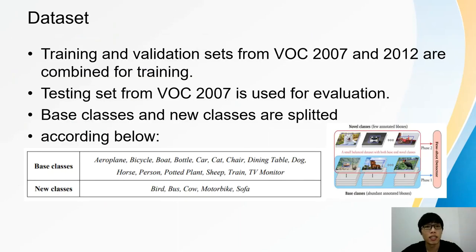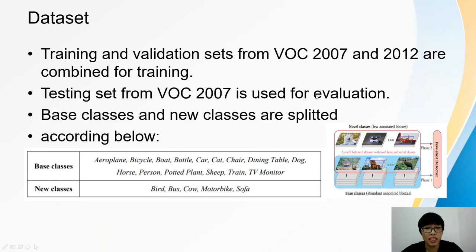Next, I will explain the data presentation and preparations for this project. The PASCAL VOC dataset will be used for this project because of the adequate number of object classes for detection and performance analysis. Training and validation sets from VOC 2007 and VOC 2012 are combined for training, whilst the testing set from VOC 2007 is used for testing. The base class and new class are split according to the tables below. Bird, bus, cow, and motorbike will be the new classes for phase 2 training, whilst the remaining classes will be the base classes for phase 1 training.